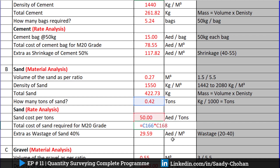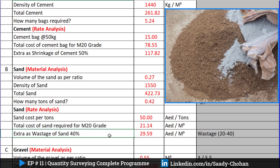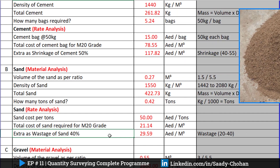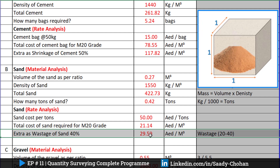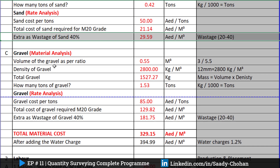Note that sand behaves opposite to cement — sand doesn't shrink, so we use the term wastage instead of shrinkage. I'm considering 14 percent wastage for sand. After adding that, the sand will cost approximately 30 AED per cubic meter. As per the given M20 ratio, the sand cost is 29.59 AED per cubic meter.